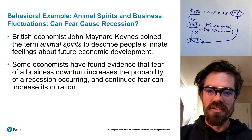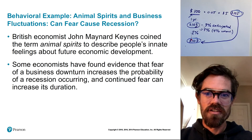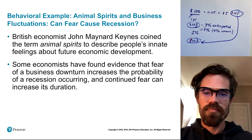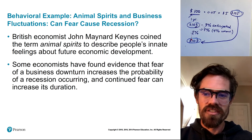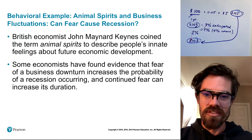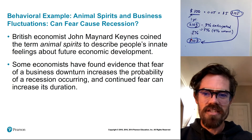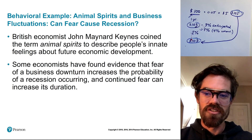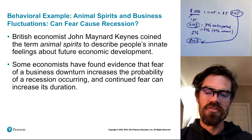To wrap up this section, let's talk about a behavioral example: animal spirits and business fluctuations. John Maynard Keynes coined the term 'animal spirits,' referring to how people in times of panic and fear revert to their animal instincts. If you've been to the grocery store and seen empty shelves, you've witnessed people's animal spirits — when people panic, they don't think clearly and act more like animals. Some economists have found evidence that fear of an economic downturn can actually increase the probability of a recession occurring — essentially self-fulfilling prophecies — and continued fear can increase the length of the contraction.